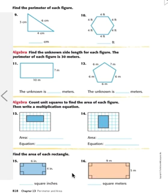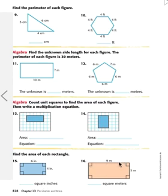Now the last ones, 15 and 16, we're supposed to find the area of each rectangle. We know that to find the area, we multiply length times width. So 6 times 4 is equal to — hopefully you came up with 24 square inches like I did. And here we go, 9 times 5. Give you a minute to figure that one out. My answer is 45.